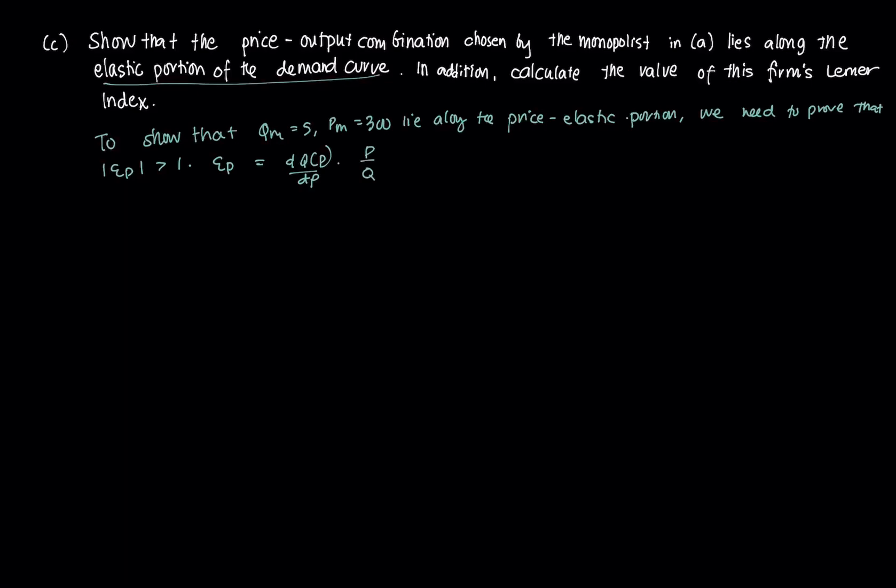Essentially we just need to solve for this and prove that it's greater than 1. If you notice this form here, it's the direct demand function, but we're given the inverse. So P equals, if I recall correctly, P equals 400 minus 20Q. So that's the inverse form. We can calculate this one: dQ/dP over dP, which is the same as 1 over dP/dQ over dQ.